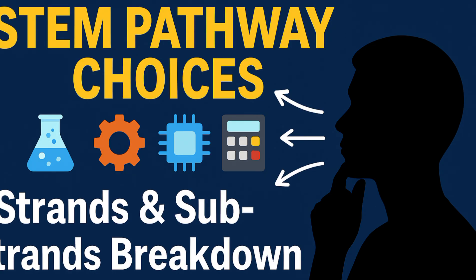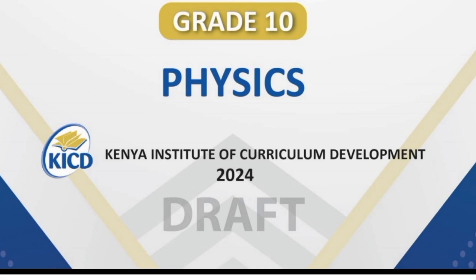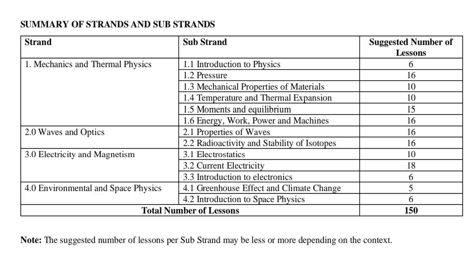Our first learning area under the STEM pathway is physics. The first strand is mechanics and thermal physics. Under that, the substrands are: introduction to physics, pressure, mechanical properties of materials, temperature and thermal expansion, moments and equilibrium, and energy, work, power, and machines.